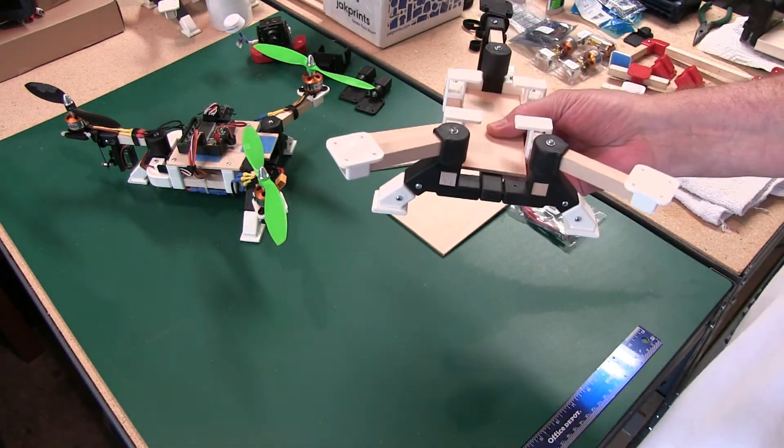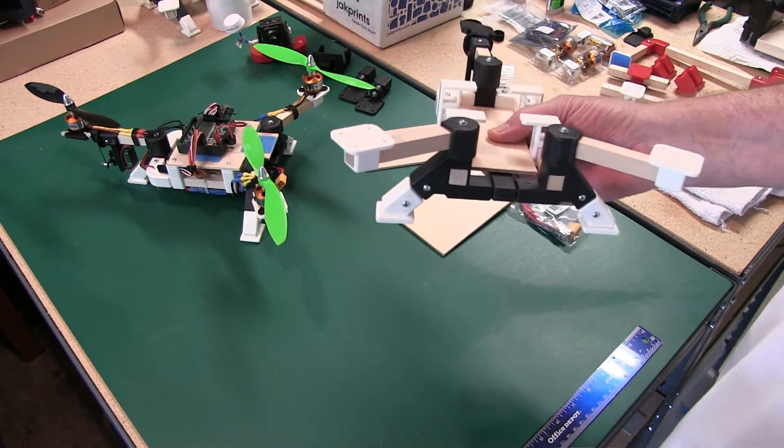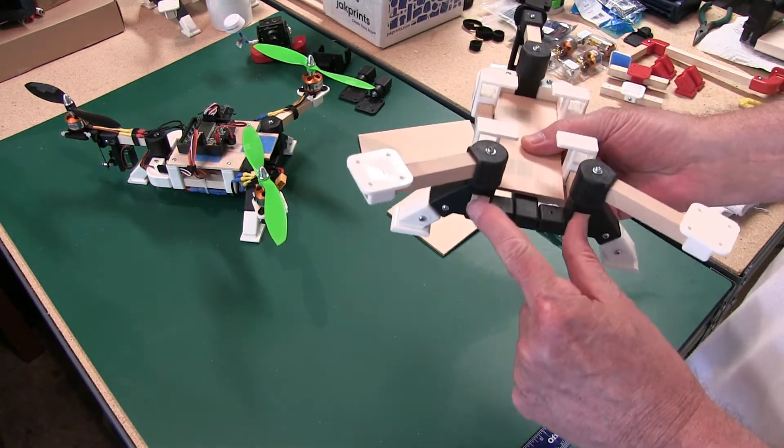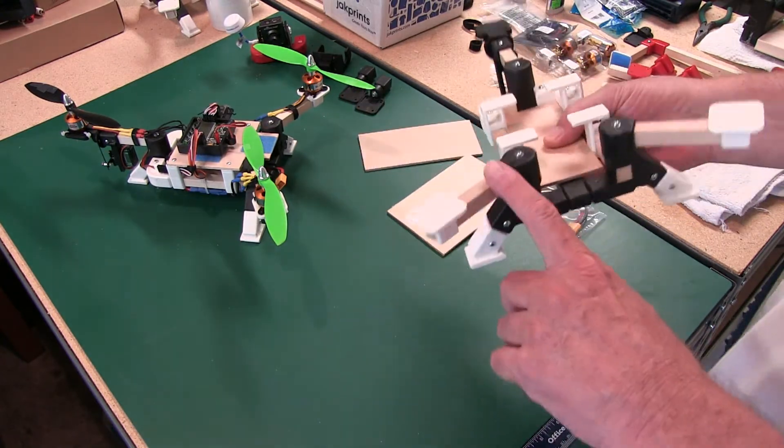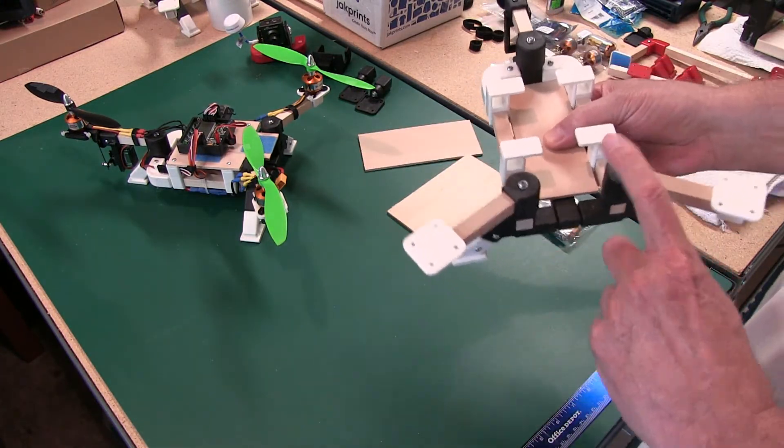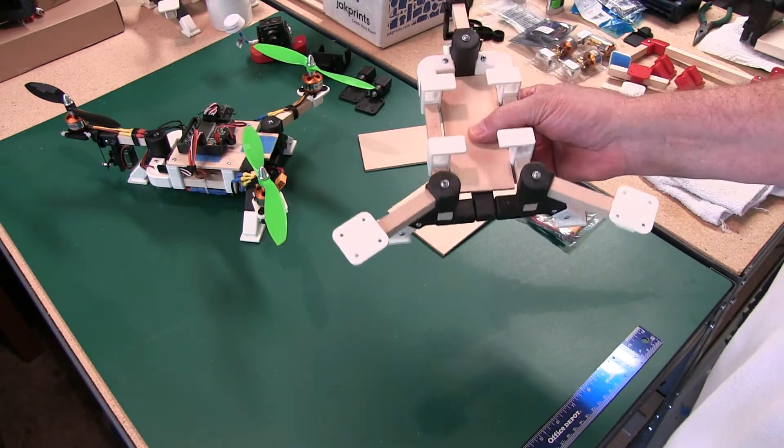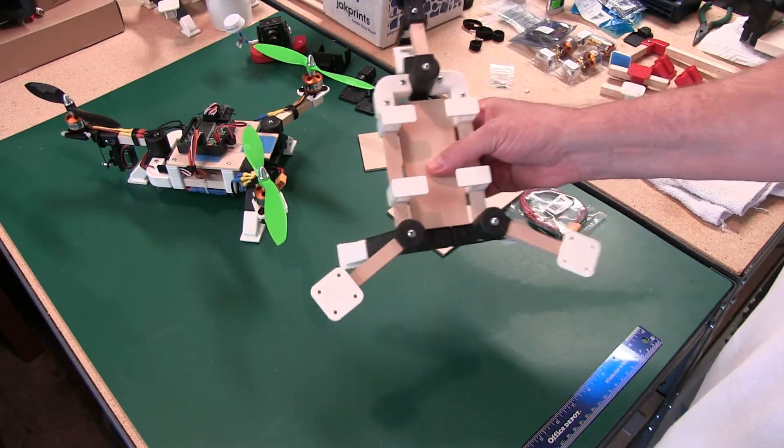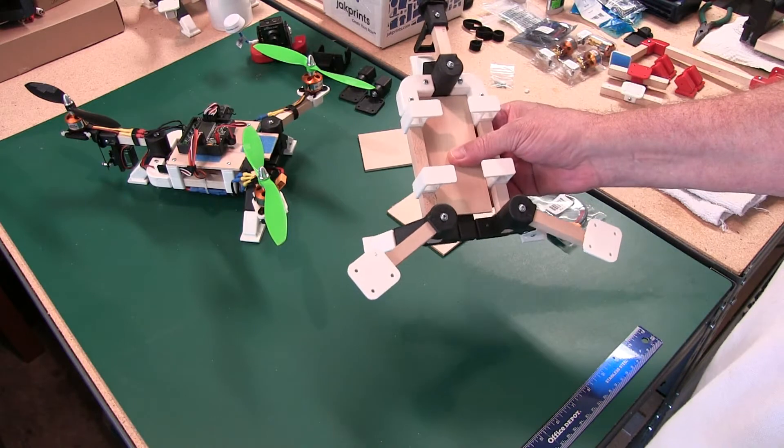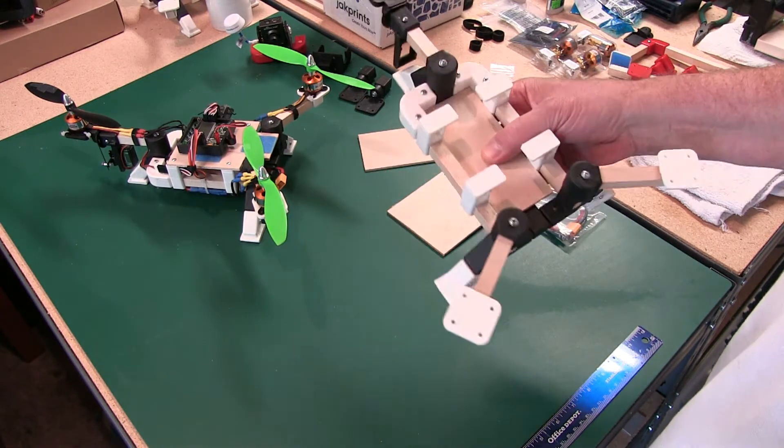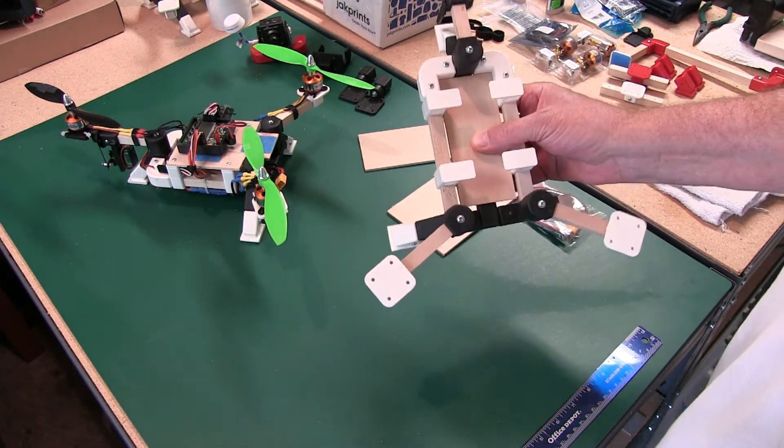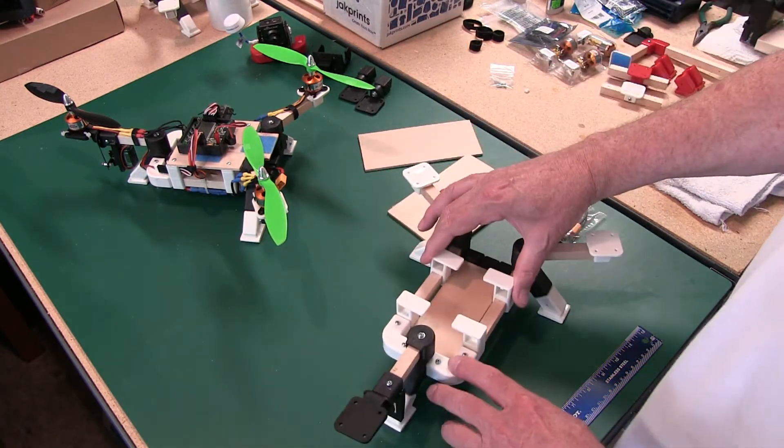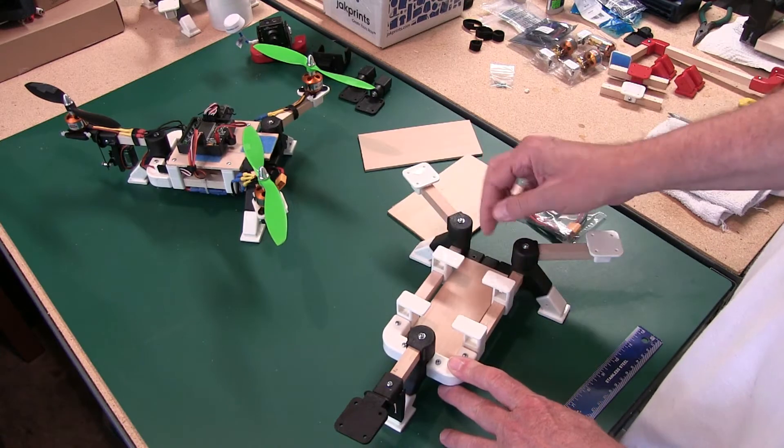The only thing that's different on this one from the little mini quad is that we do not have 90s in the front. They just come up flush. You can paint this black and get the look that's popular nowadays. I kind of like the wood look, but you can do whatever you want with it. When it's all painted black, it looks pretty cool.